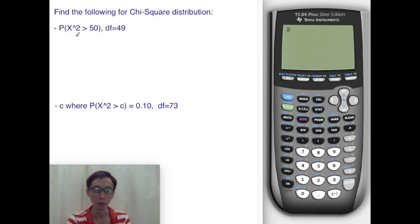We have this forward problem where we want to find the probability of chi-square. This is a chi-square distribution for degree of freedom 49. Find the probability that chi-square is greater than 50.